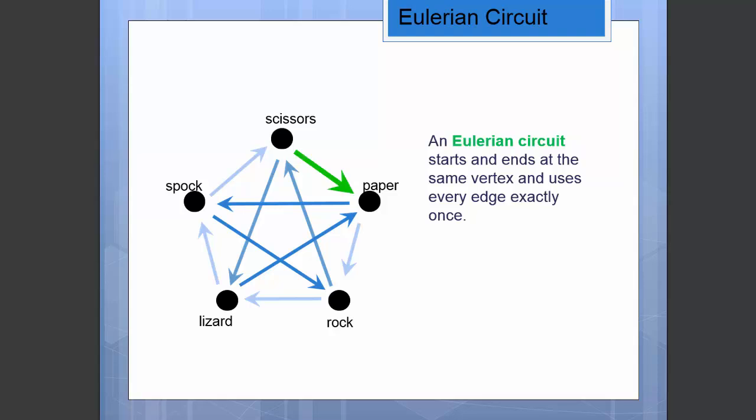Here we might choose to go from scissors to paper and then from paper to rock and keep going around the outside. There's no reason we cannot touch the same vertex more than once, we just can only touch every edge exactly once. Once we get back to scissors we can go down to lizard, then paper, then Spock, rock, and finally back to scissors.